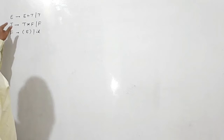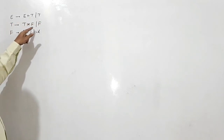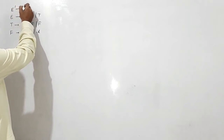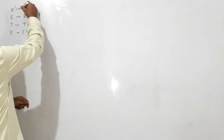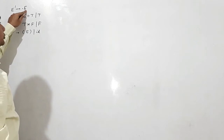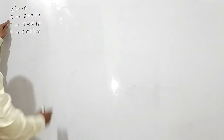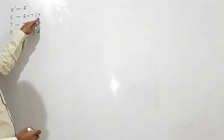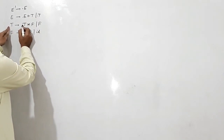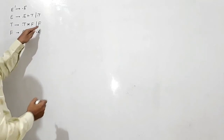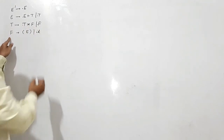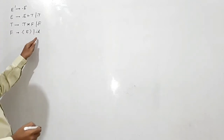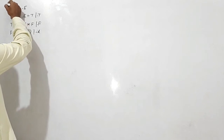One grammar is given to us: E is given E plus T or T; T is given T star F or F; F is given open bracket E close bracket or identifier. Now we shall use augmented production here: E-dash will give dot E. Because this dot is before the non-terminal E, I will have to write the closure of E. E is producing dot E plus T or dot T. Closure of T: T is producing dot T star F and dot F. I will have to write the closure of F: F is producing dot open bracket E close bracket or dot ID. This is one state — state I0.